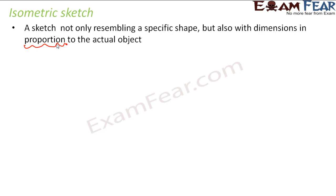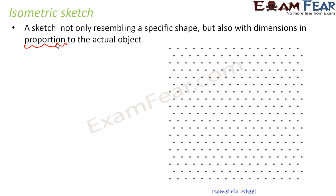In order to do isometric sketching, we make use of a special type of paper called an isometric dot paper or isometric dot sheet. What is special about this sheet is that it is made up of small equilateral triangles. An equilateral triangle has all three sides equal. Instead of drawing the triangles, we just have the points representing the three vertices of each equilateral triangle. This is how the isometric sheet is designed.